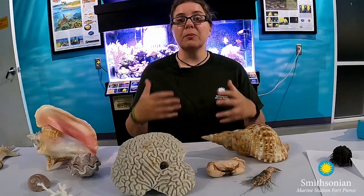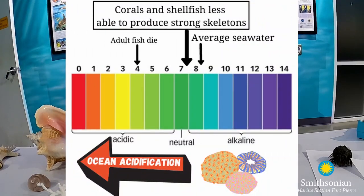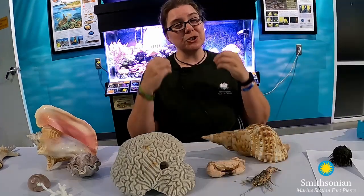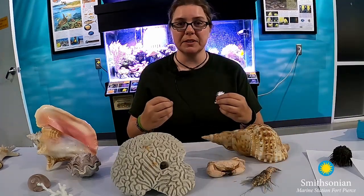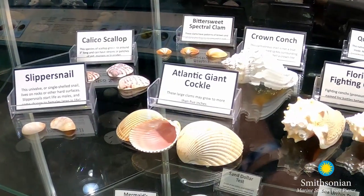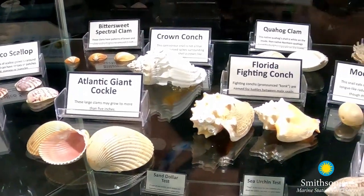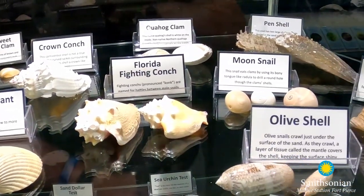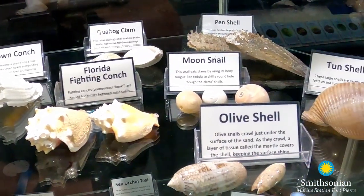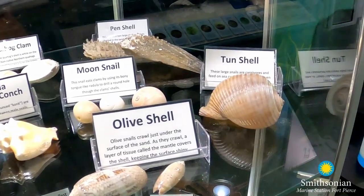This is where the term ocean acidification comes from. When the water is too acidic, it prevents calcium carbonate compounds from developing, making it harder for calcifying organisms to create strong shells to protect themselves. This can lead to mortality for a lot of those calcifying organisms, who are an integral part of the ocean food web.